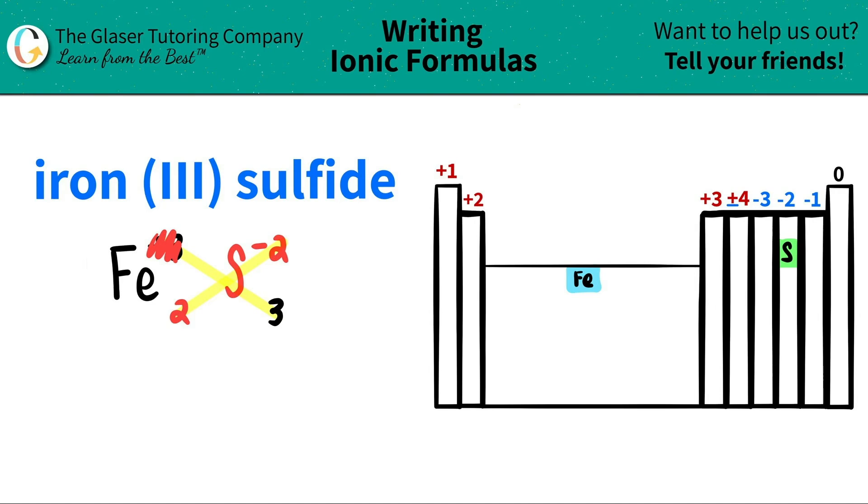When you do this crisscrossing, you could kind of scribble these out. Don't worry about those. Just focus on the subscripts down below. Now I'm ready to write my formula. I have iron and I need two of them. So I have to write a two and then comes my sulfur. I need three of them. So I got to write that three there and I am done.